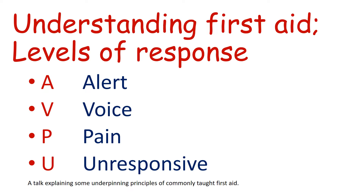In the first aid situation, we use the AVPU scale: A for Alert, V for Voice, P for Pain, and U for Unresponsive. At the A level, the patient is fully alert — we get eye contact and consider their level of consciousness basically normal. If the patient is lying with their eyes closed and not giving a spontaneous response, they are not alert. If their level of consciousness is slightly lower, they will still respond to voice — when we speak to them, we get some kind of response.